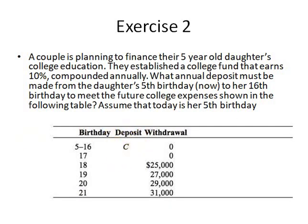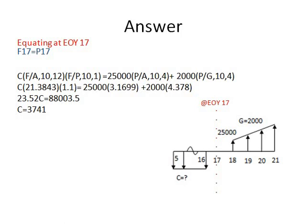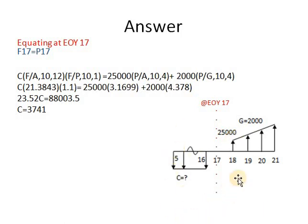The first step is drawing the cash flow diagram. From year 5 till year 16 inclusive, a deposit of C is made. The first withdrawal at year 18 is $25,000. The present value of the withdrawals will be at year 17, and the future value of the annual deposit annuity is located at year 16.